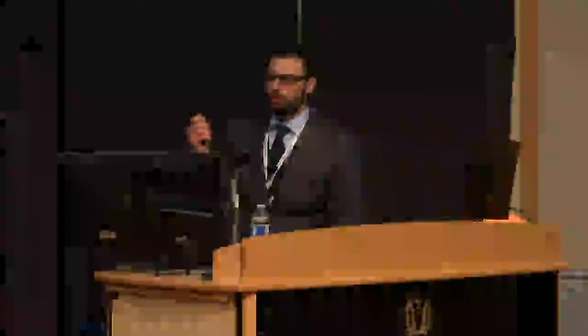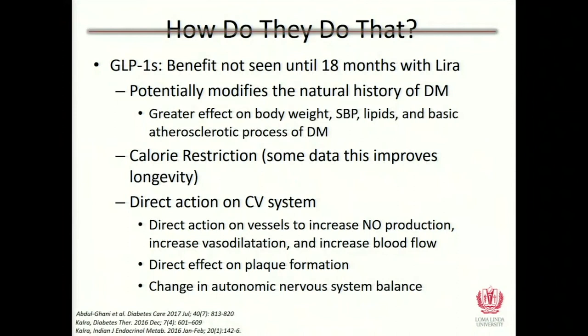For GLP-1s, benefits appear at 18 months. Possible mechanisms include a decrease in the natural history and progression of diabetes — you lose more weight, which lowers blood pressure and lipids, reducing atherosclerotic disease progression. Other hypotheses include calorie restriction, anti-inflammatory effects from calorie restriction, or direct action on the cardiovascular system: increased nitric oxide production, decreased plaque formation, or changes in autonomic nervous balance. Not completely clear, but these are the leading hypotheses.